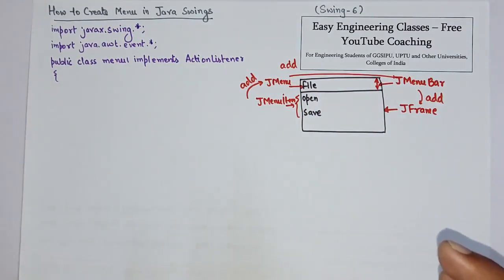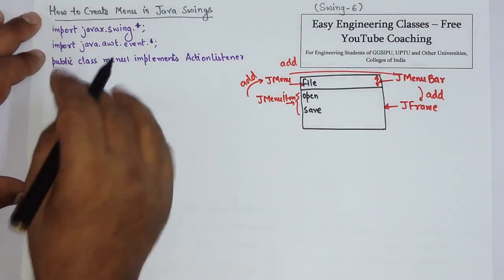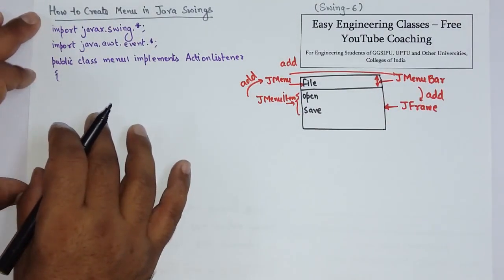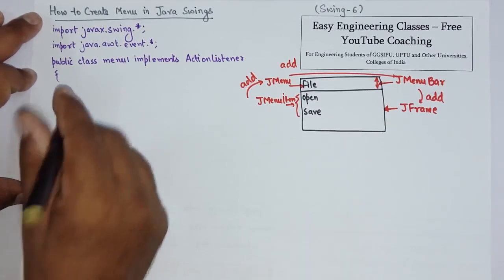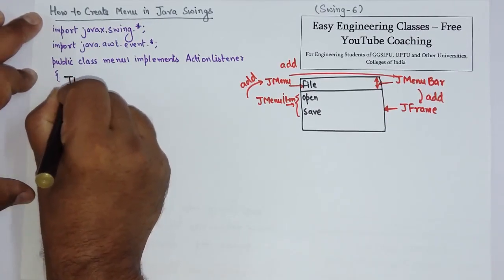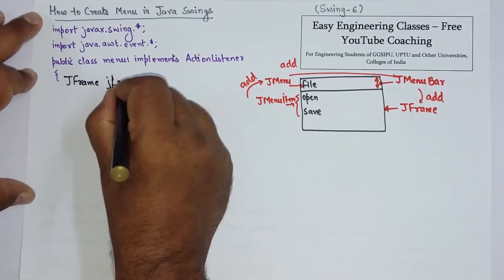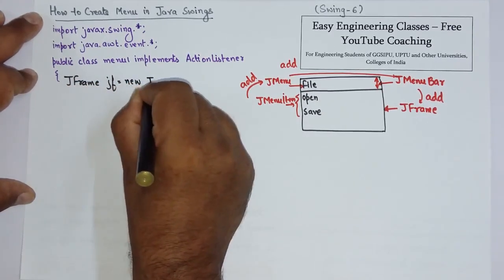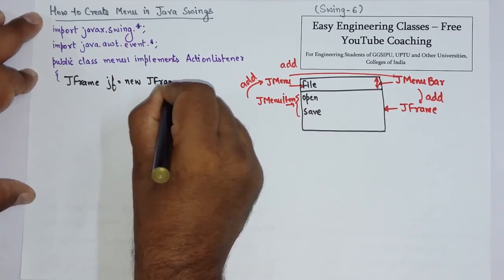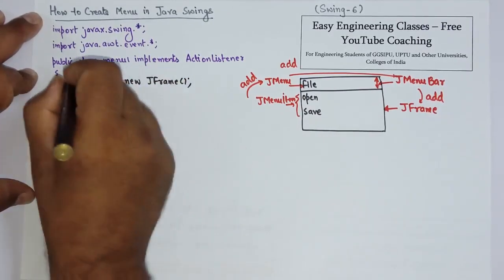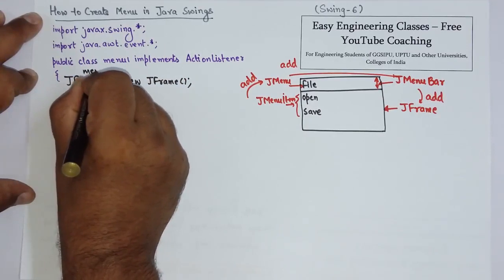So first of all, what are we going to do? JMenu items. So now let's see how you can actually do that. So I am creating frame. JFrame jf equals new JFrame. This is the constructor actually.